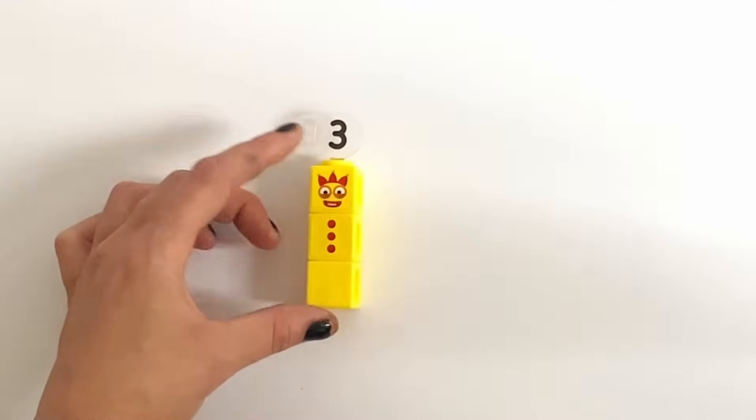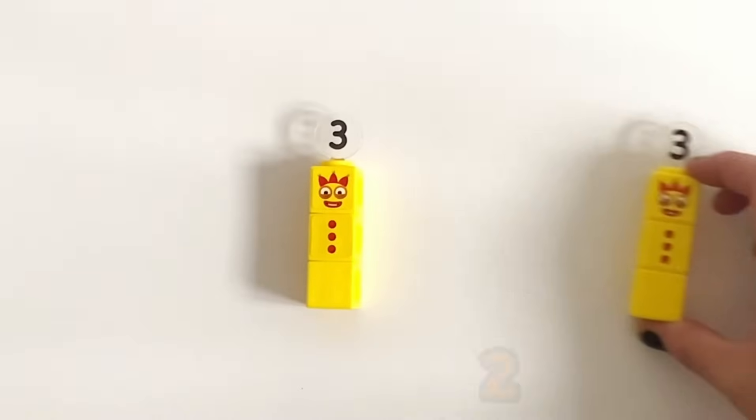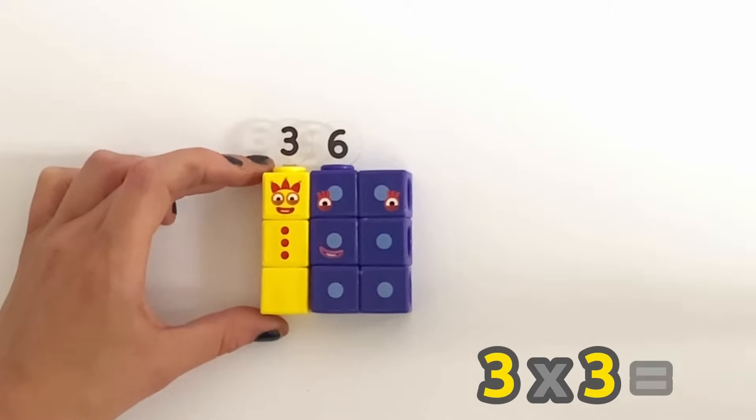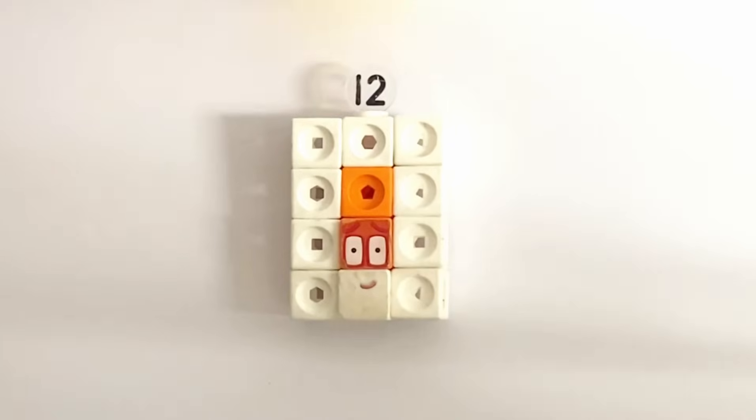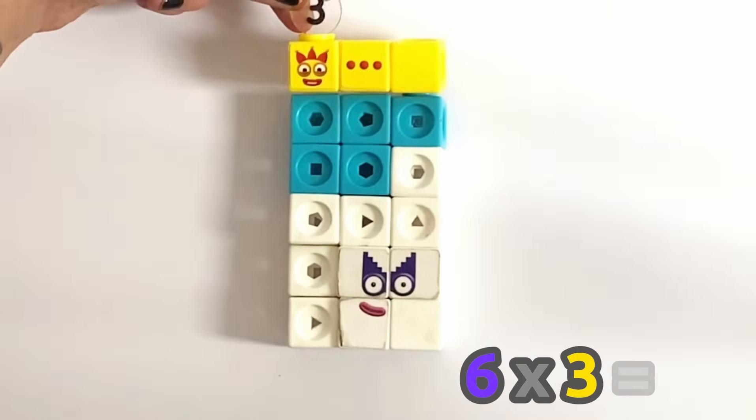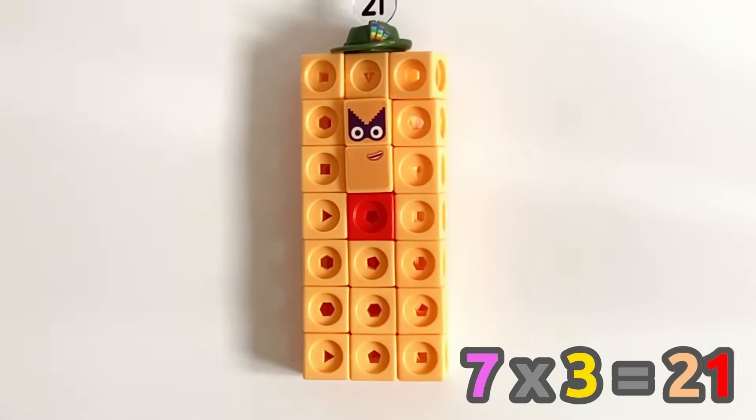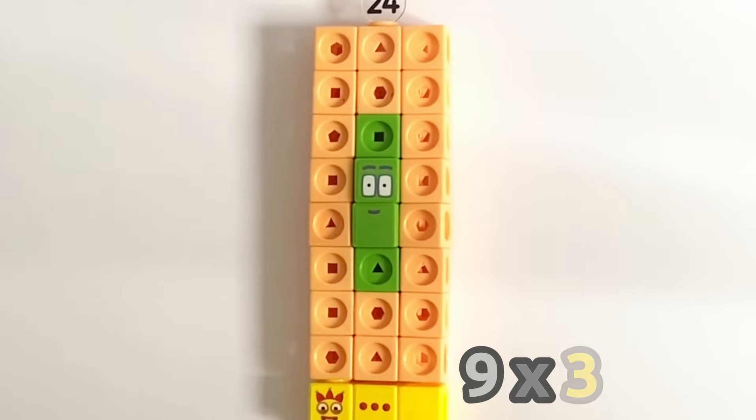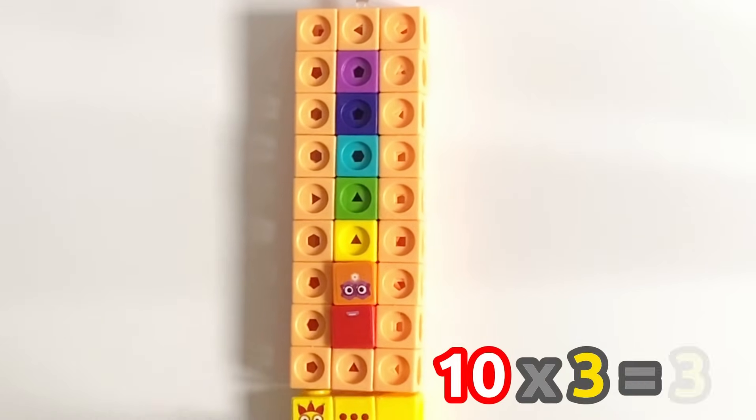So next up we have the 3 times table. So 1 lots of 3 or 1 times 3 equals 3. And 2 times 3 equals 6. 3 lots of 3 equal 9. 4 lots of 3 equal 12. 5 times 3 equals 15. 6 times 3 equal 18. 7 times 3 equals 21. 8 times 3 equals 24. 9 lots of 3's are 27. And lastly, 10 times 3 equals 30.